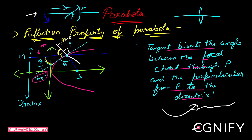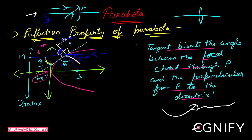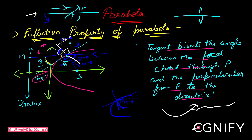If a ray comes parallel, this line and this white line become vertically opposite, so this angle is also 90 minus theta. Here you have theta, and this whole angle is 90 because the white line is a normal to the blue line. So this remaining part is also 90 minus theta. A ray came parallel at 90 minus theta, hit the normal, and got reflected by 90 minus theta.